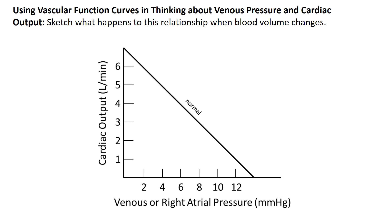One more exercise: what happens to this relationship when blood volume changes? If we put more blood volume into the system, there's more volume in the veins, pressure increases, and the curve shifts upward — equivalent to increasing venous tone. What about decreasing blood volume? In an acute injury where a patient is hemorrhaging, the curves shift the other way.